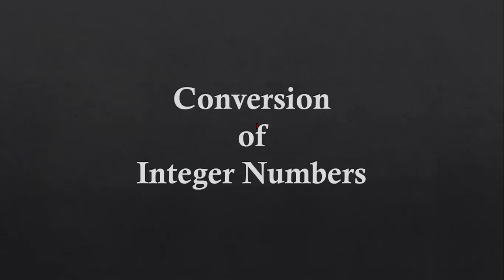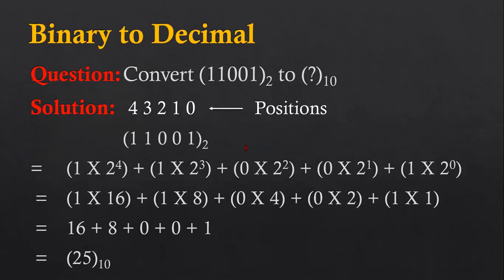First, I am going to discuss the conversion of integer numbers. This is the first example where I am going to convert a binary number to the decimal number system. The number we have to convert is 11001 with base 2, which is why it is binary. We have to convert it into decimal, so the base will be written as 10. Now we have to follow those three steps.